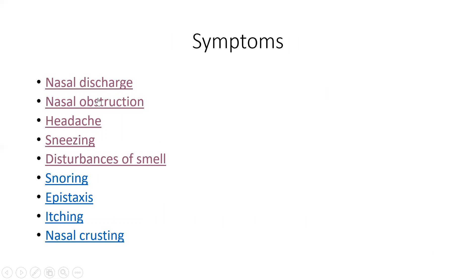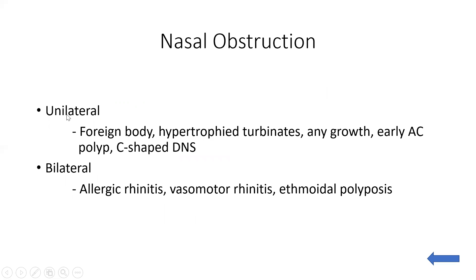The next symptom is nasal obstruction, which can also be unilateral or bilateral. Common causes of unilateral nasal obstruction include a foreign body in the nose. If the foreign body remains in the nose for a long time and the patient is unaware of it, it can lead to deposition of calcium and magnesium salts over it, which is called a rhinolith. So a long-standing foreign body can lead to the development of a rhinolith, which is also a cause of unilateral nasal obstruction.